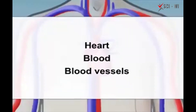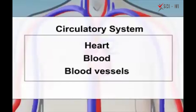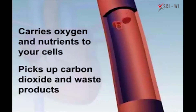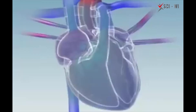Together, the heart, blood, and blood vessels are part of the circulatory system, which does two of the most important jobs in the body. It carries oxygen and nutrients to all of your cells, and it picks up carbon dioxide and other waste products that your body produces, so they can be disposed of.